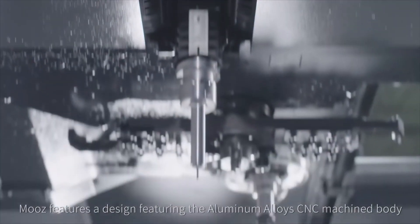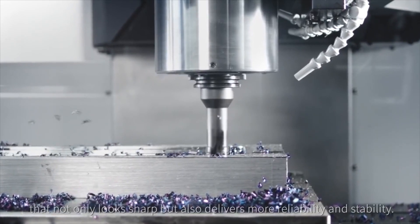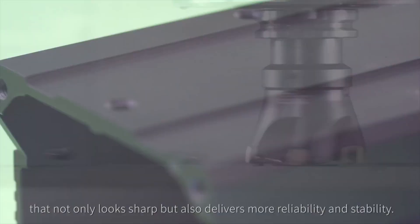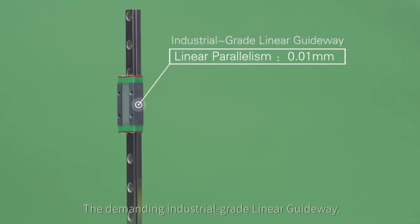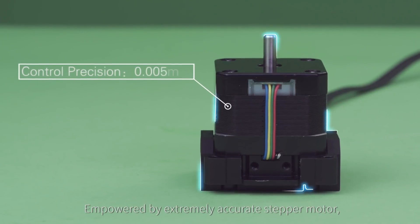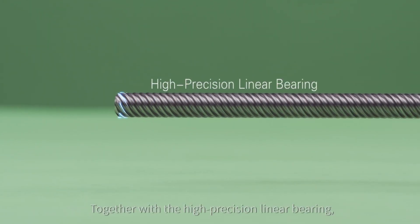Moose features a design featuring the aluminum alloy CNC machine body that not only looks sharp but also delivers more reliability and stability. The demanding industrial grade linear guideway empowered by extremely accurate stepper motor.